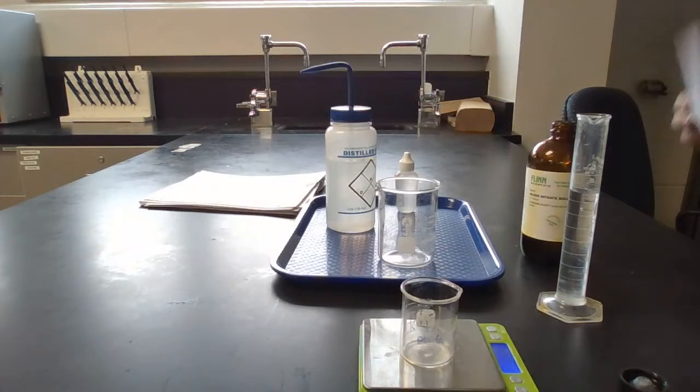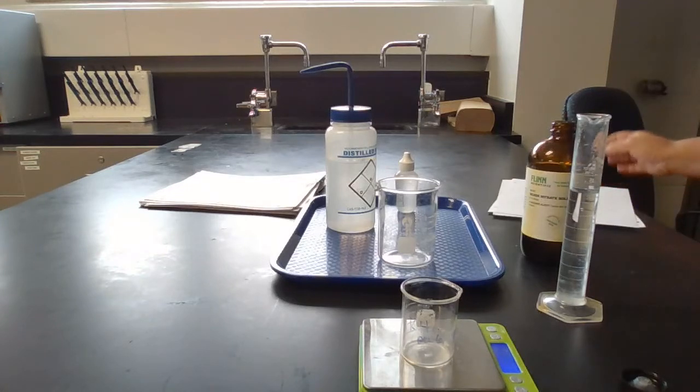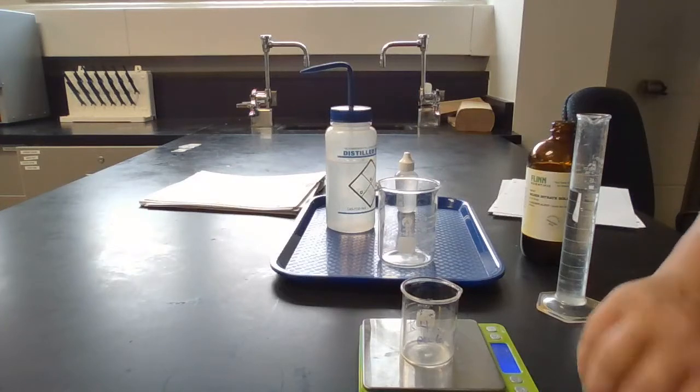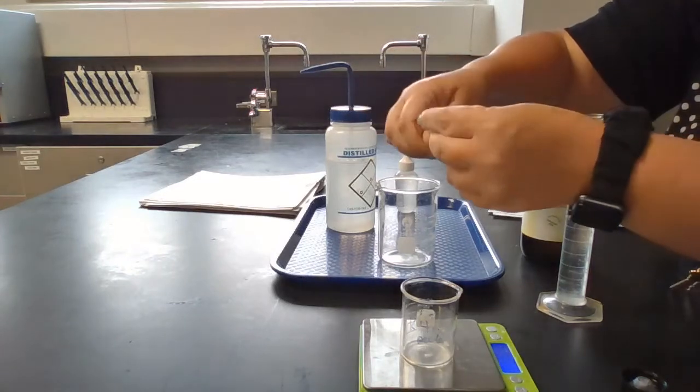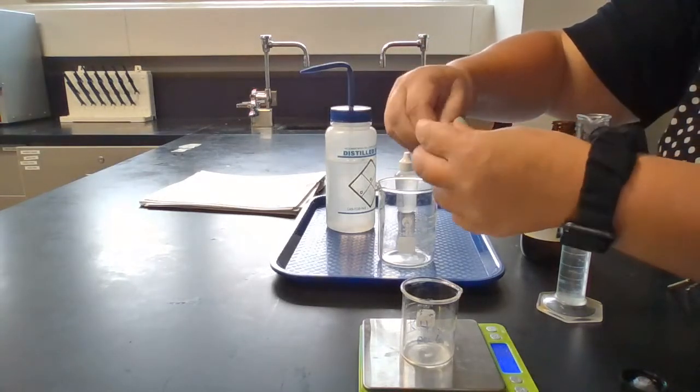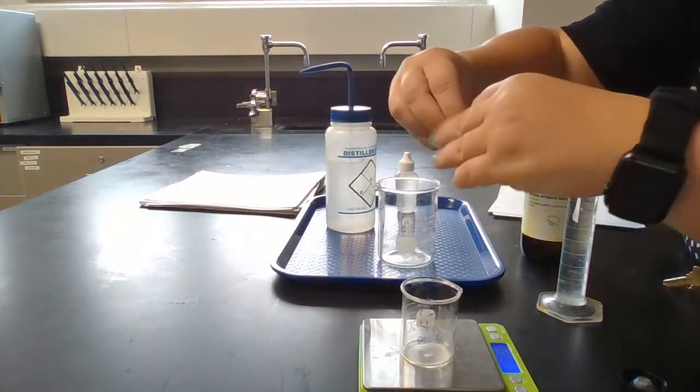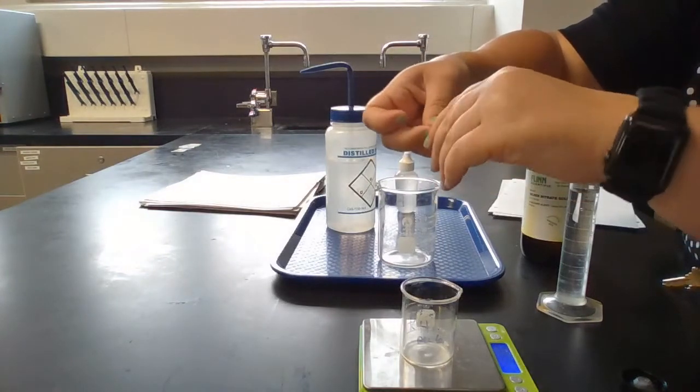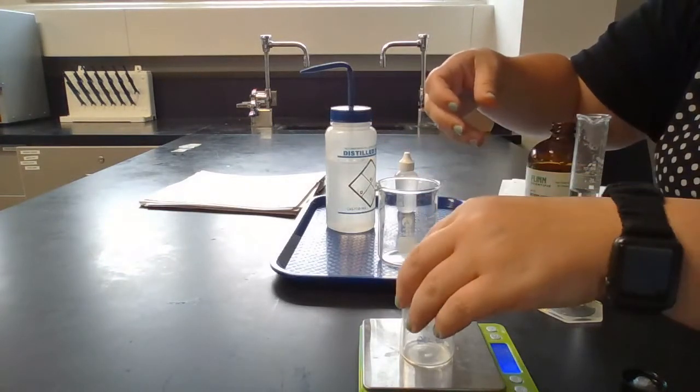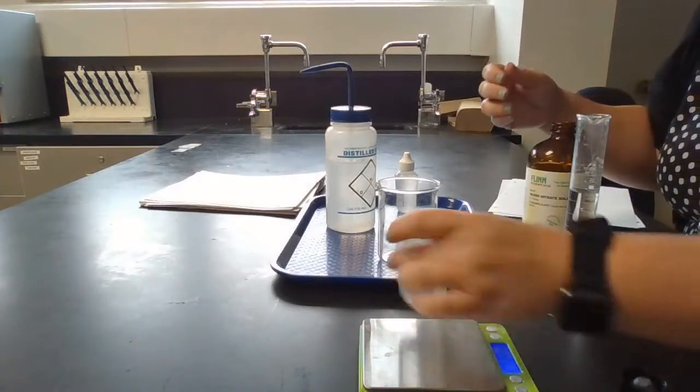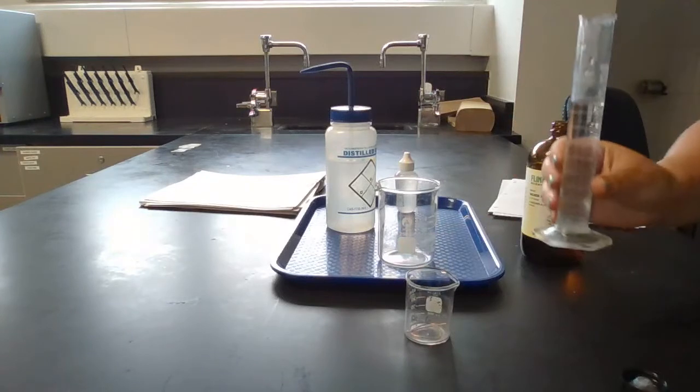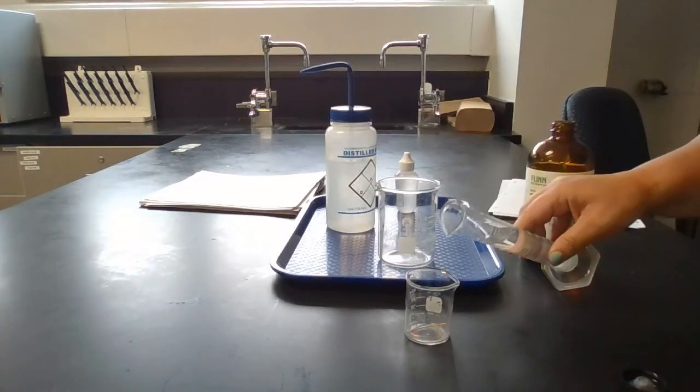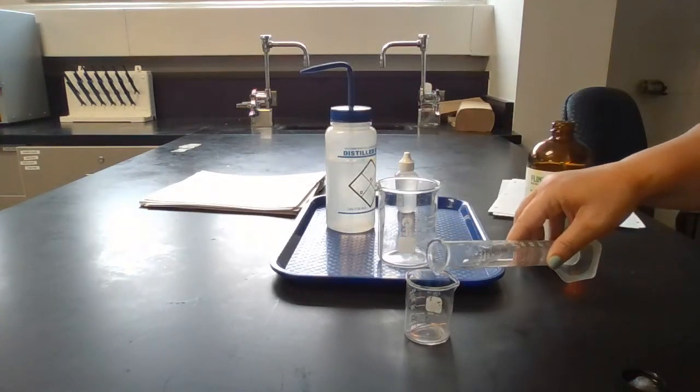Next thing you're going to do is coil the wire, like so, and put it in your 50 milliliter beaker and it doesn't need to be on the balance for this. And then you're going to pour your 40 milliliters of silver nitrate right in there.